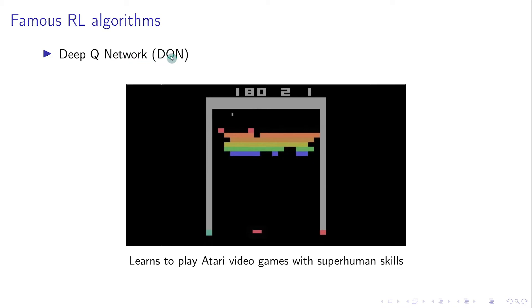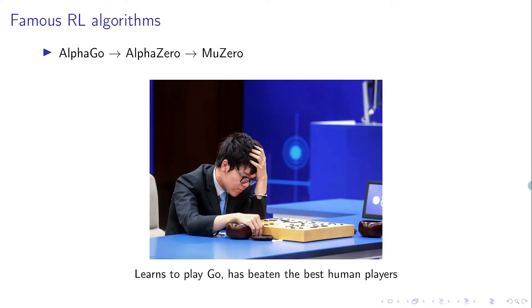It's called DQN in short, and it was used to play Atari video games like this one with superhuman skills. Another famous one is AlphaGo, which later evolved into AlphaZero and MuZero. This algorithm was used to beat grandmasters in the game of Go.